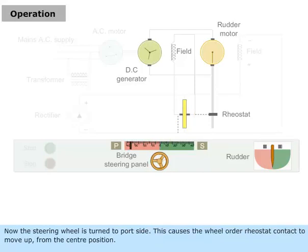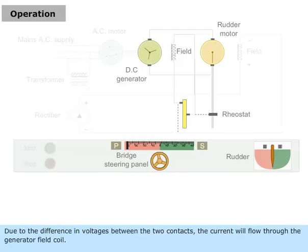Now, the steering wheel is turned to port side. This causes the wheel order rheostat contact to move up from the center position. Due to the difference in voltages between the two contacts, the current will flow through the generator field coil.